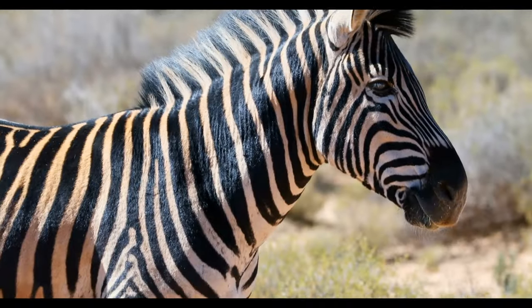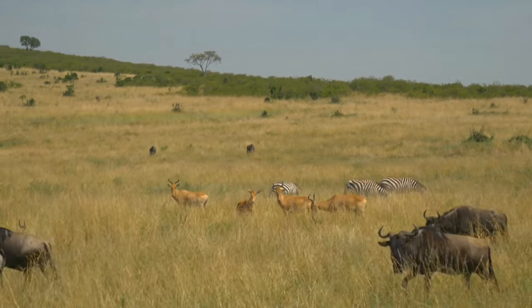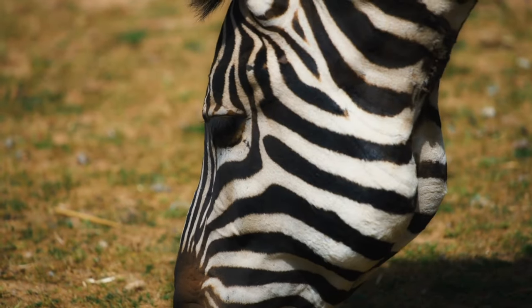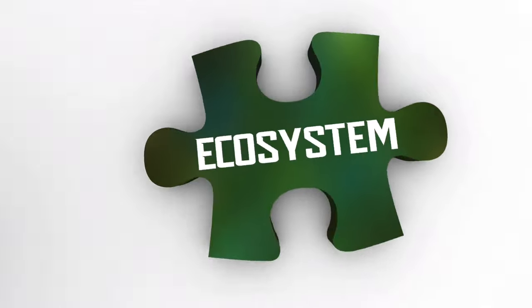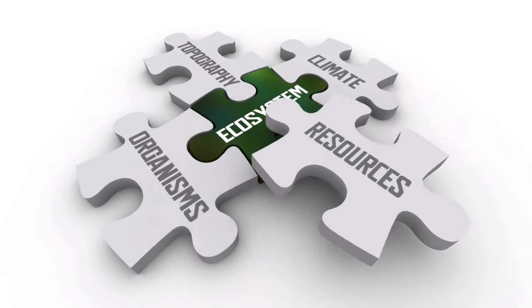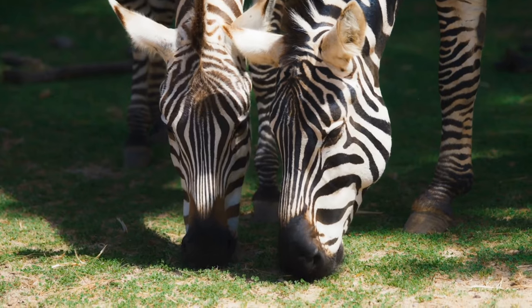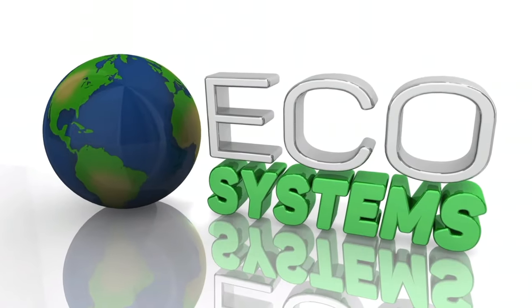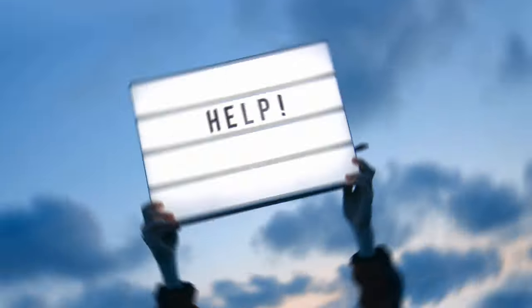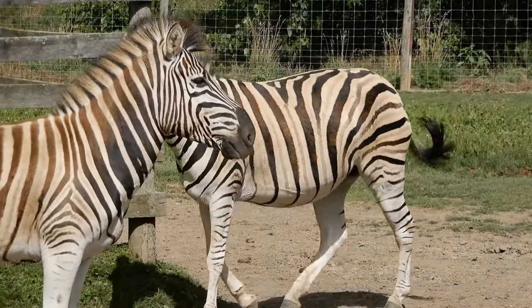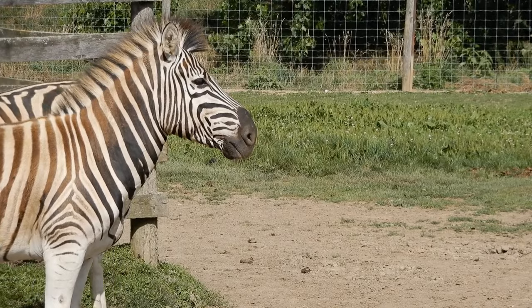Conservation projects focus on preserving zebra habitats, addressing human-wildlife conflicts, and implementing anti-poaching measures. These initiatives contribute to the well-being of zebras and their ecosystems. Zebras play a vital role in ecosystems as grazers, helping maintain the balance between vegetation and herbivores. Their presence contributes to the overall health and diversity of their habitats.